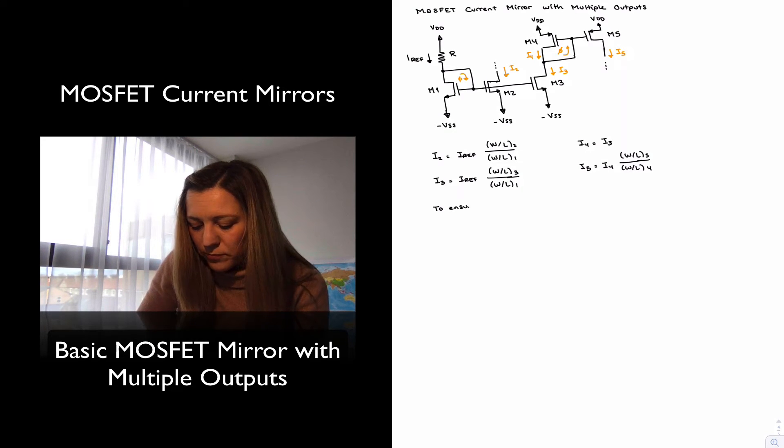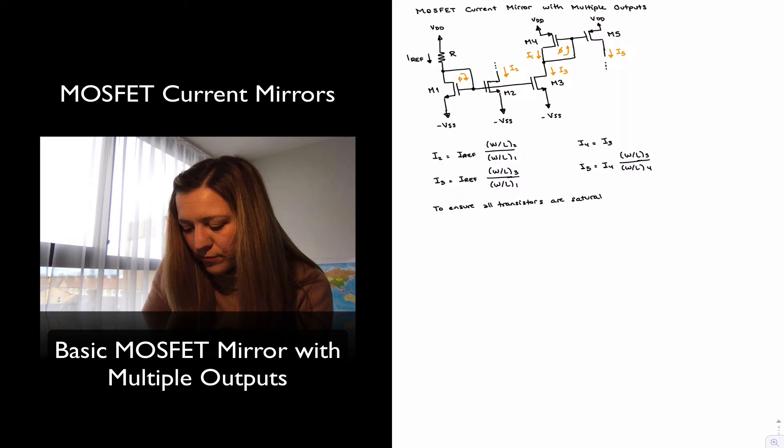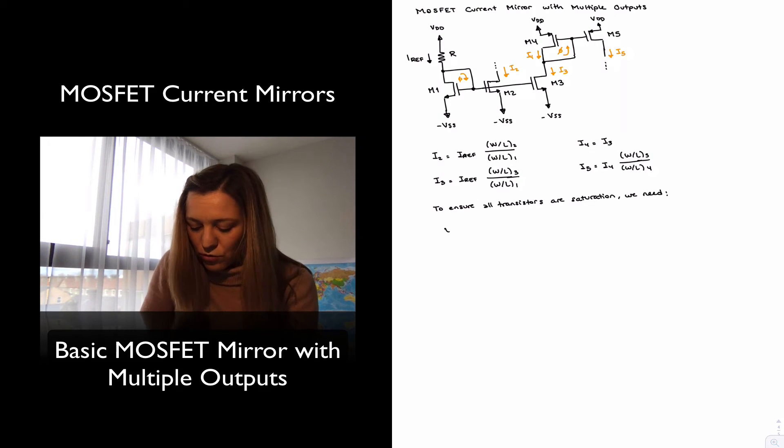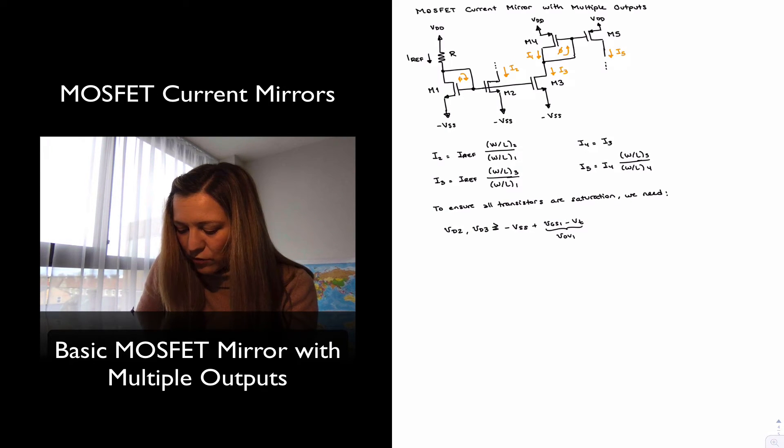So to ensure all transistors are in saturation, we need the following conditions for VD2 and VD3, basically the drain voltages of transistors M2 and M3. We need those to be greater than or equal to minus VSS plus VGS1 minus VT or basically VOV1, the overdrive voltage of transistor 1.